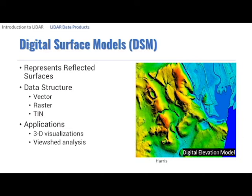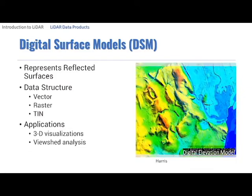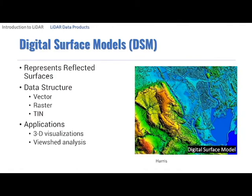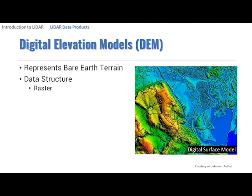The difference between a DSM and a DEM can be seen when the first reflective surface features are removed. These products are generated from the same LiDAR point cloud, but different points are selected to create each surface. Unlike DSMs, Digital Elevation Models or DEMs are bare earth models containing elevations at points arranged in a raster data structure, where each cell value represents an elevation.